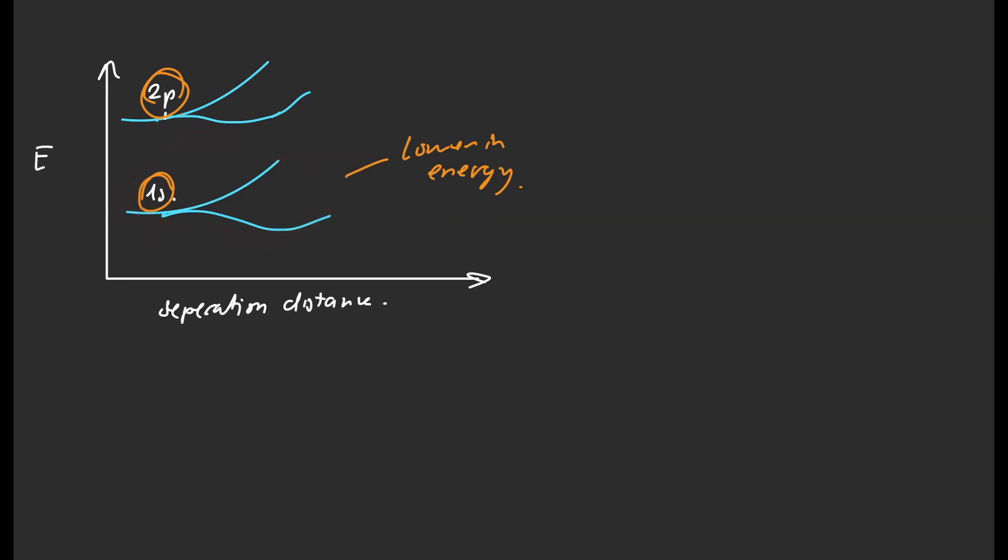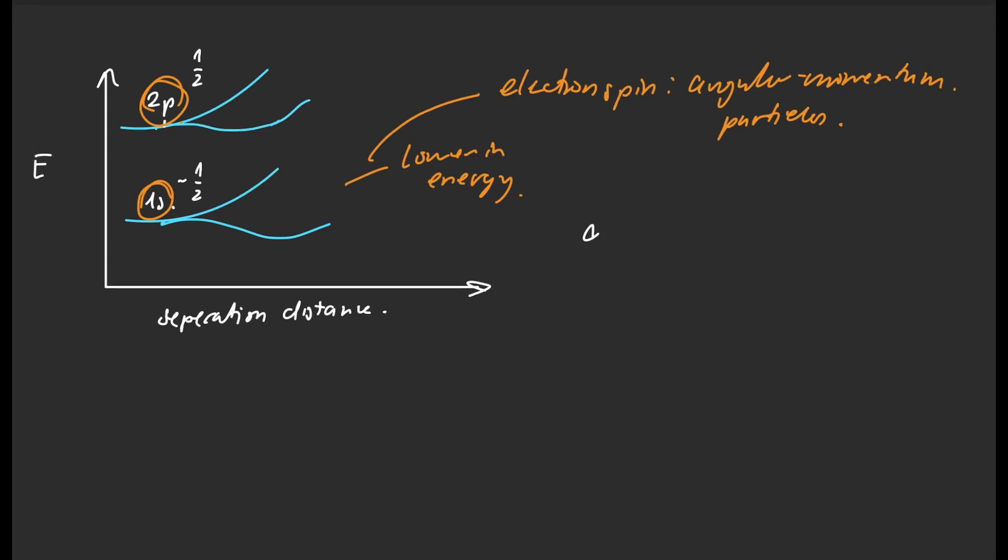We can think of the lower one as having an electronic spin. Electronic spin is the angular momentum carried by particles. The 1s orbital has an electronic spin of negative one half, and the upper one, which is the 2p orbital, has an electronic spin of positive one half. Only the overlap of the lower in energy orbitals will lead to the formation of molecules, which means that the combination of negative one half of the 1s and the positive one half of the 2p will lead to the formation of molecules.